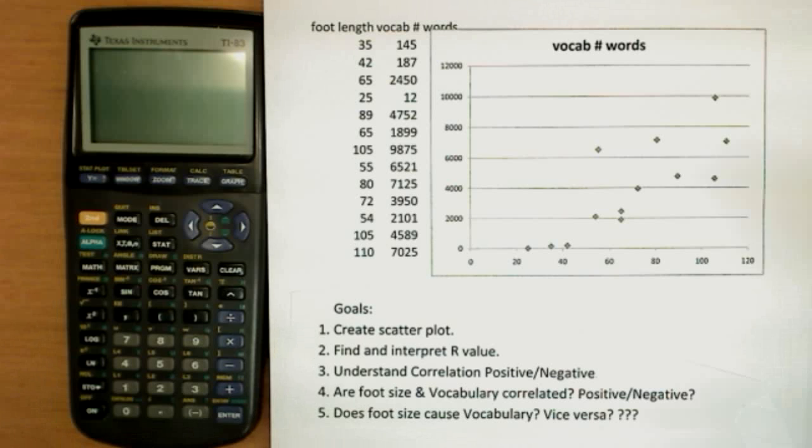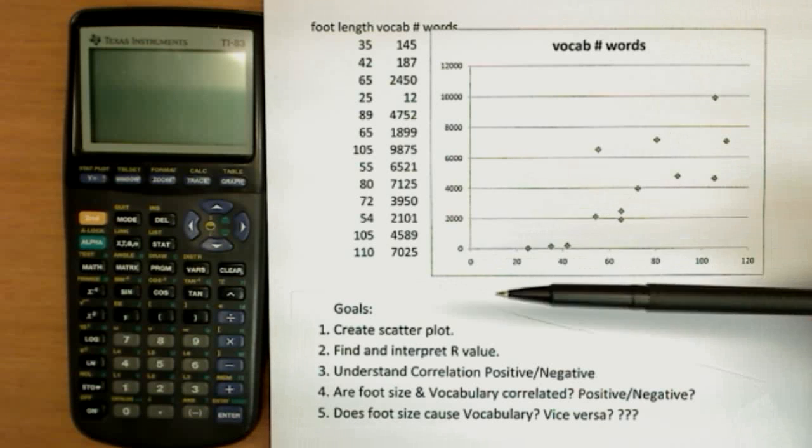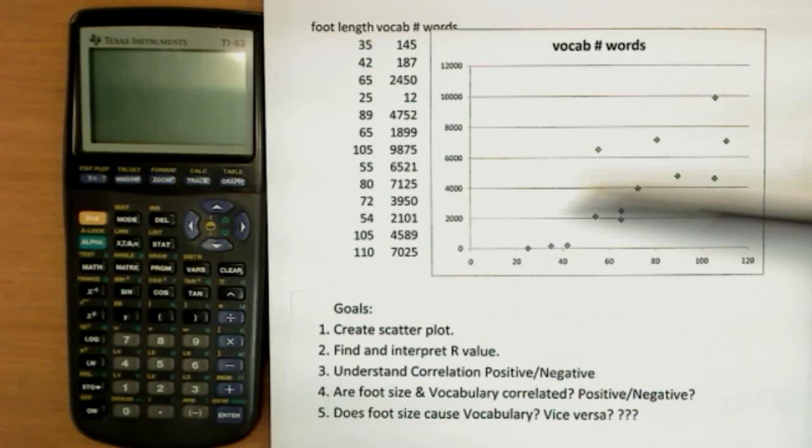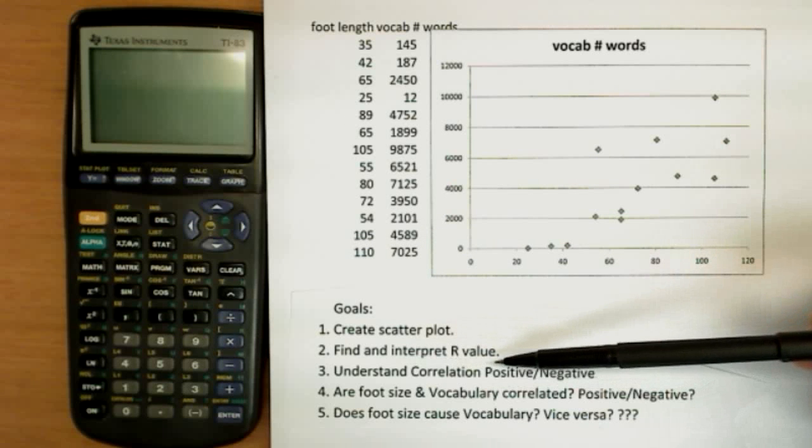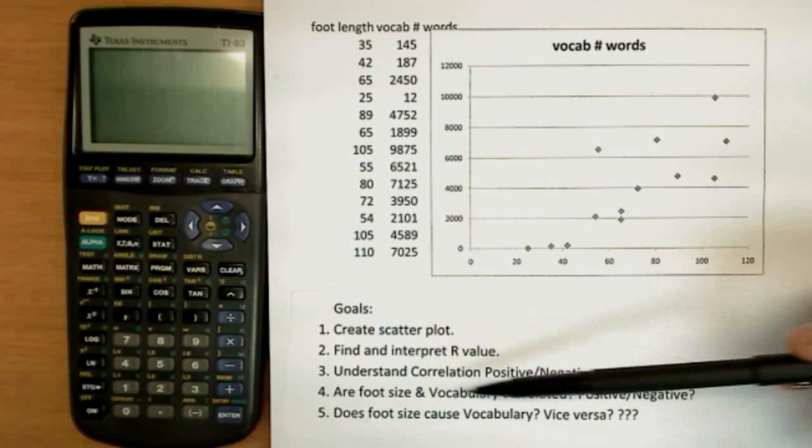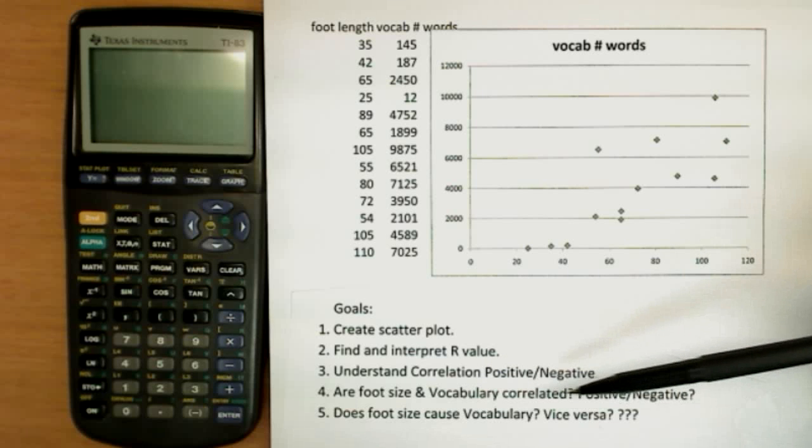Okay, this is stats number five. Our goal in this video is to learn how to create a scatter plot like this on our TI-83. We're going to find and interpret our R values and understand correlation, both positive and negative, strong and weak.